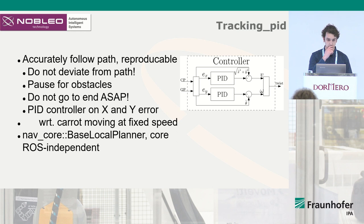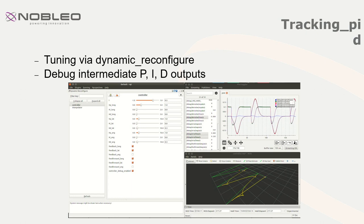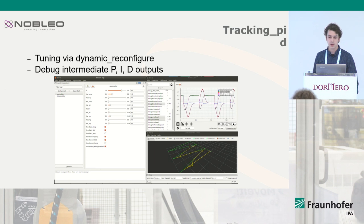If you have a controller, you want to be able to live-tune all the parameters — that's what you see here. All the parameters are live-tunable, and all the intermediate outputs of the PID phases of your controller can be independently debugged. We made use of the very handy PlotJuggler application, also available in the ROS community, which is very handy for this.